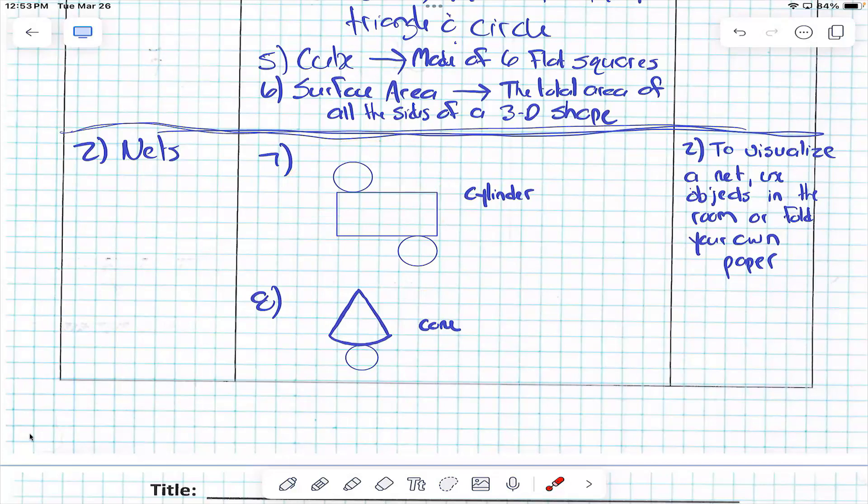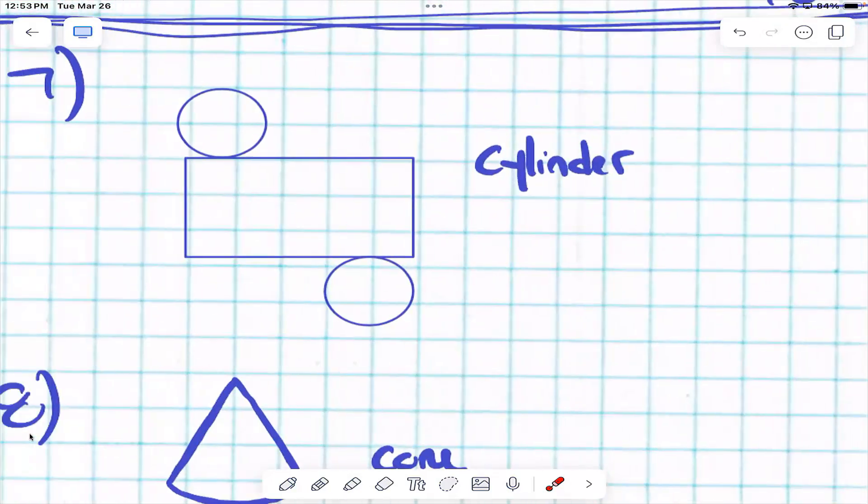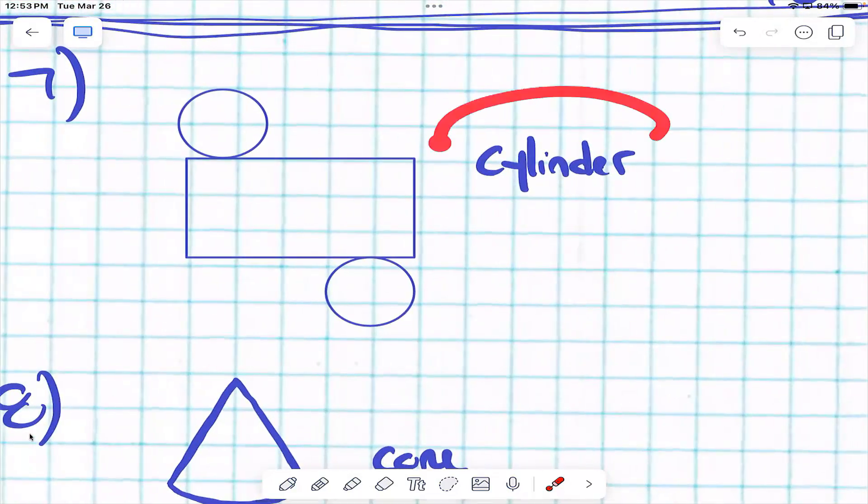It's like we took the shape and we crushed it, we flattened it, right? If I were to fold this shape back up, what would it become? Cylinder.